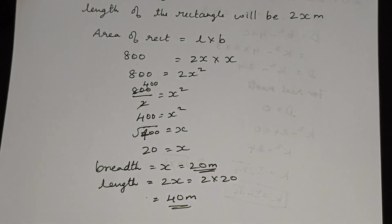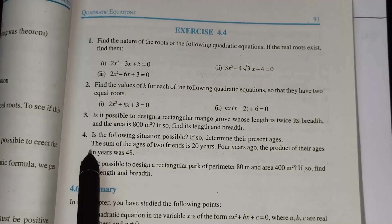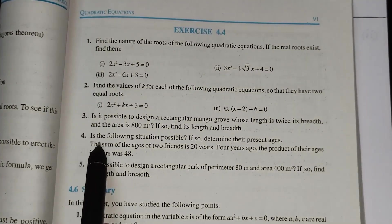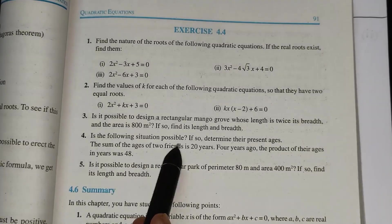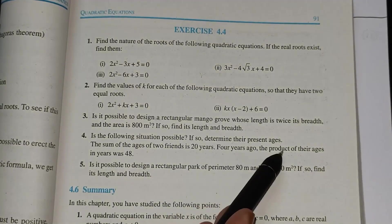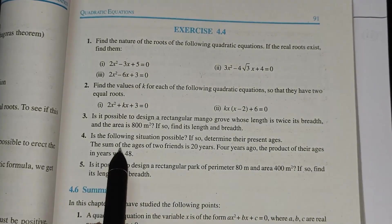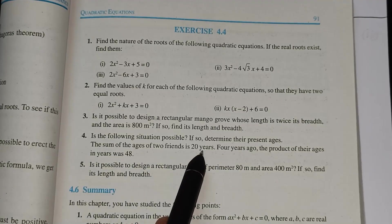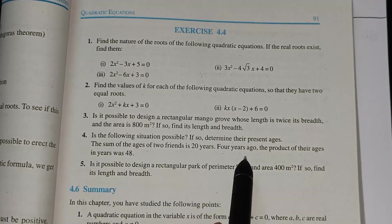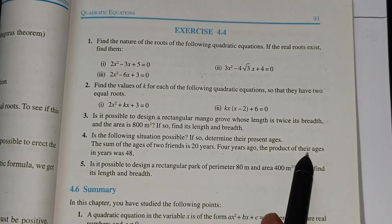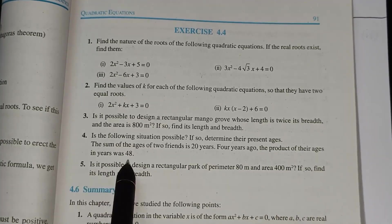Next sum: the question is whether the following situation is possible. If so, determine their present ages. The sum of the ages of two friends is 20 years. Four years ago, the product of their ages in years was 48.